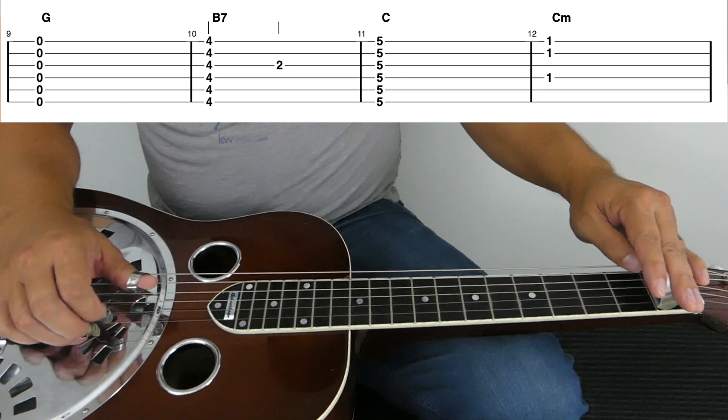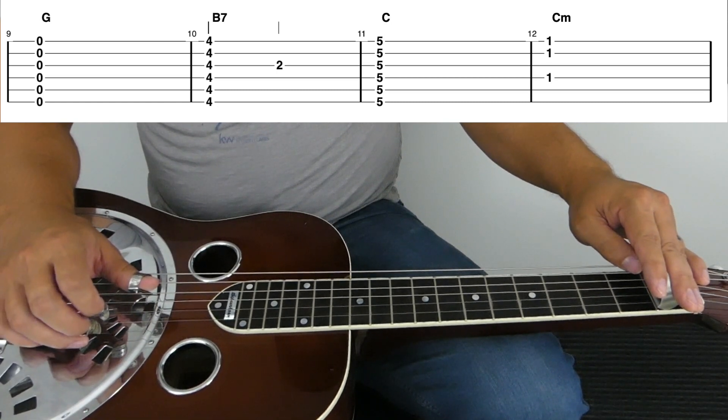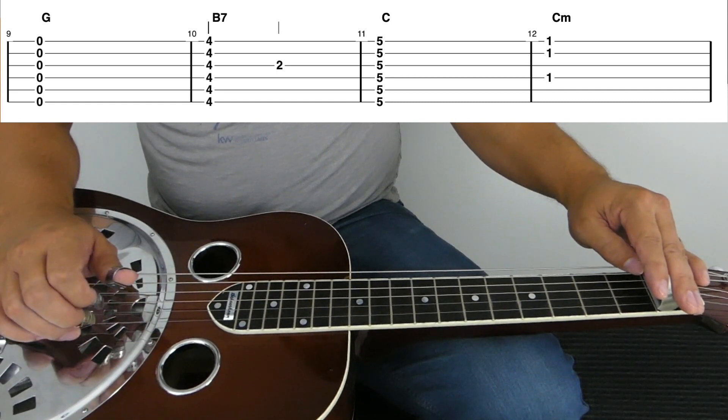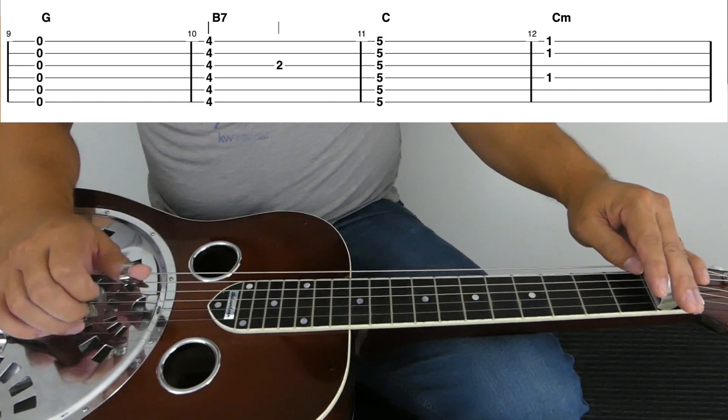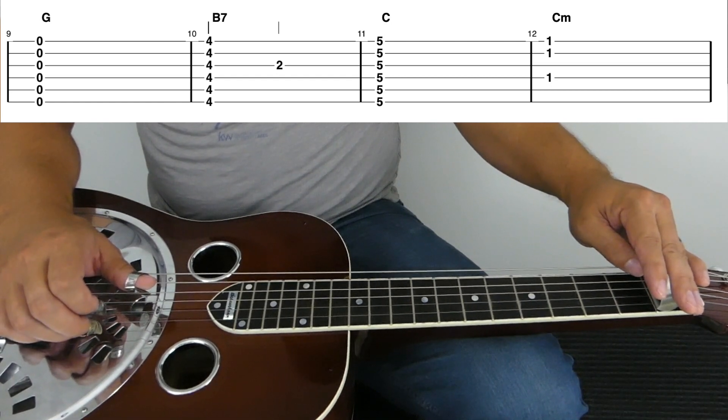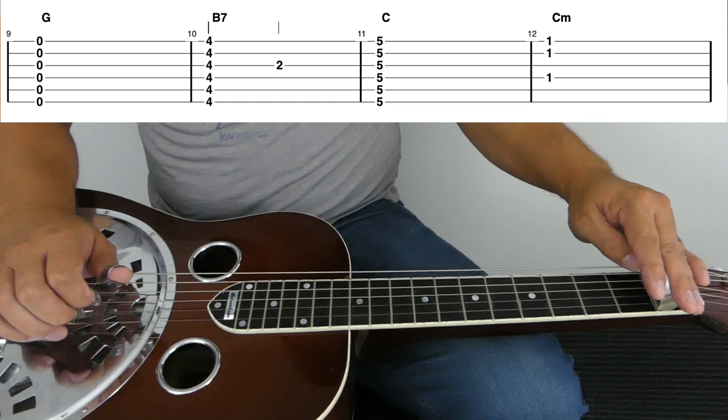That's giving me an E flat note, a C note, and an E flat note. So in this version of the C minor chord, I am getting the flat third. I'm getting it twice on that fourth and first string, and I'm also getting the root on the second string.